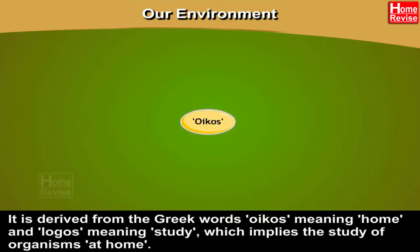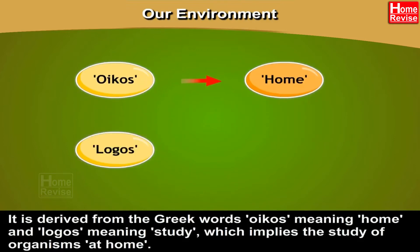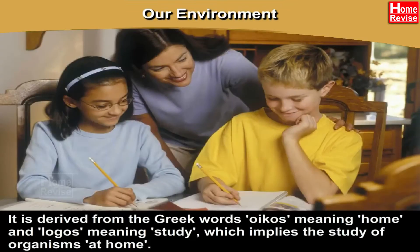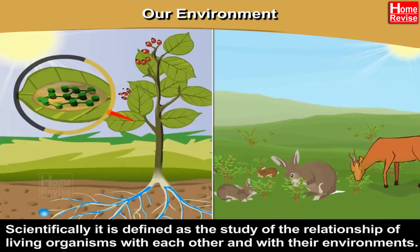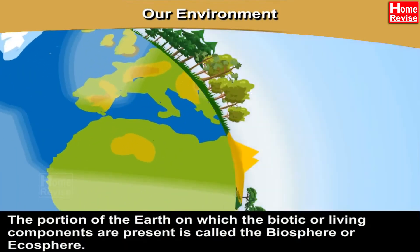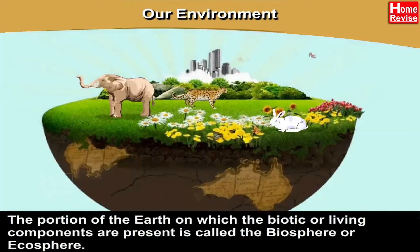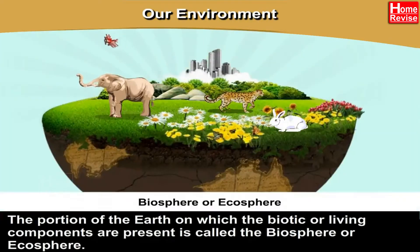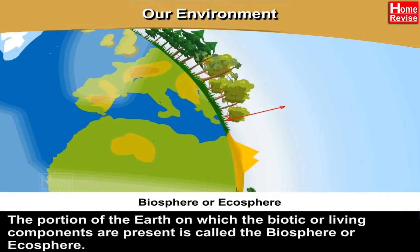Ecology is derived from the Greek words oikos meaning home and logos meaning study, which implies the study of organisms at home. Scientifically, it is defined as the study of the relationships of living organisms with each other and with their environment. The portion of the earth on which the biotic or living components are present is called the biosphere or ecosphere.